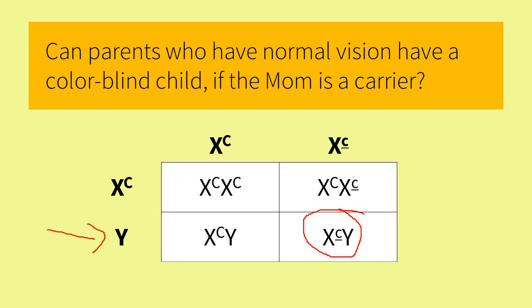Their daughters, however, will all be normal color vision, but have a 50% chance of being a carrier of the colorblindness allele.